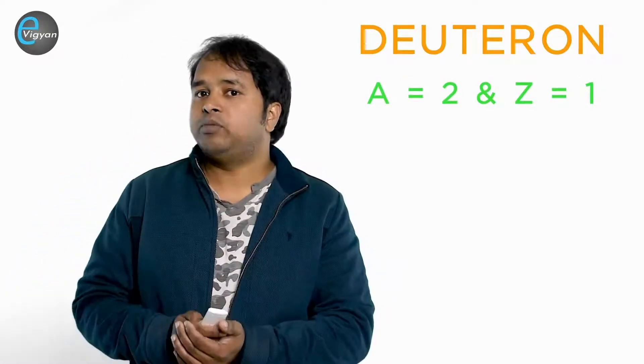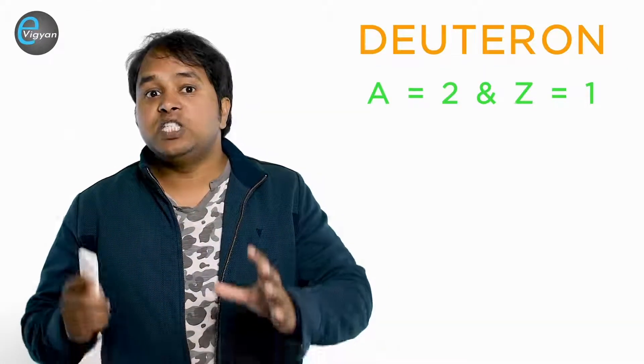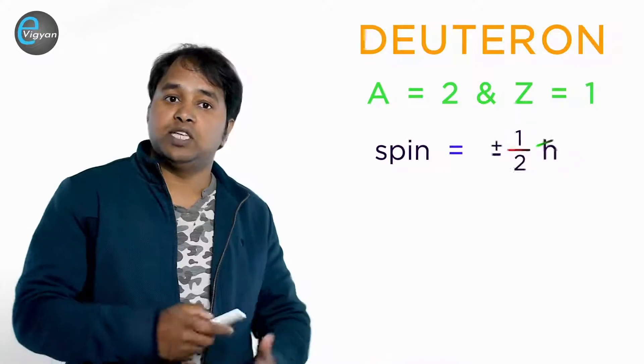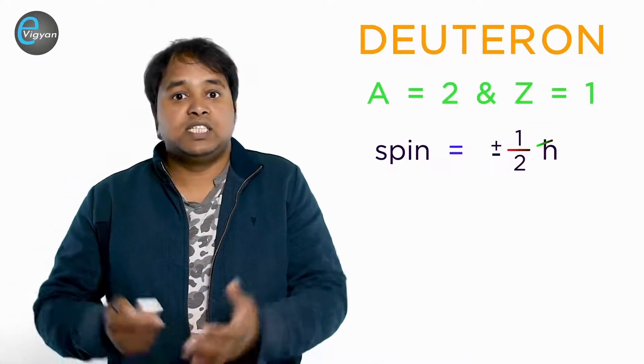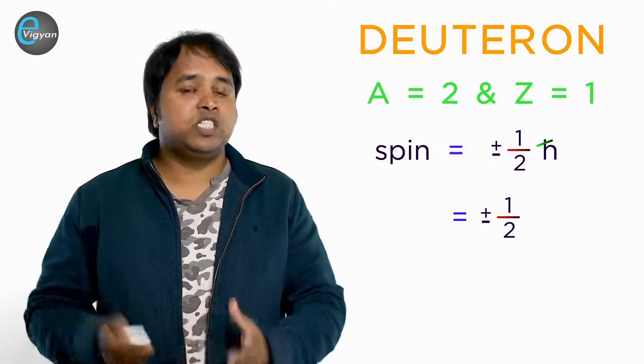So from the proton-electron hypothesis, there would be two protons and one electron. Since proton and electron both have a spin equal to ±1/2 ℏ, which can simply be written as ±1/2, because in natural unit, ℏ equal to 1.